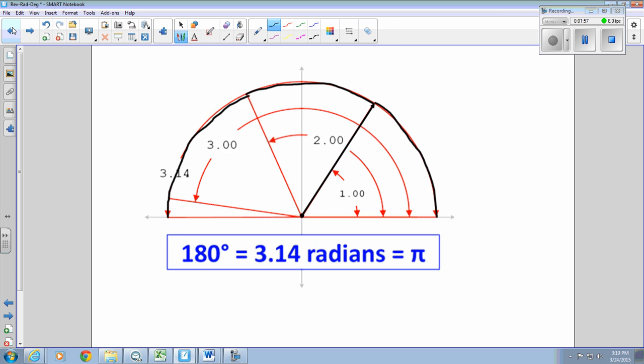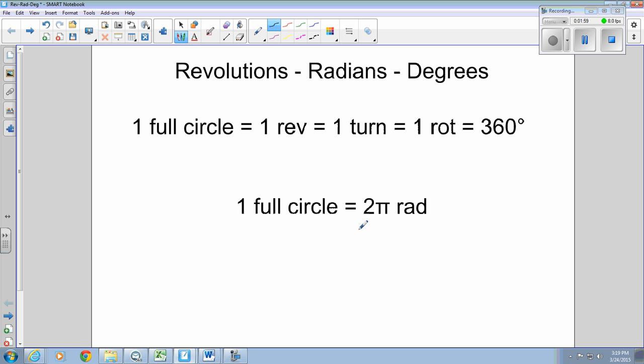Therefore, one full circle, if we go back to here, one full circle, is two pi radians. Pi just represents the 3.14 measurement that we're all familiar with from math.